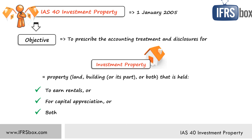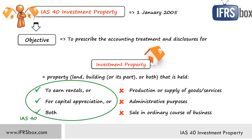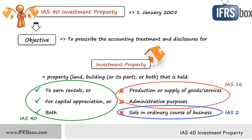Investment property is not held for use in the production or supply of goods or services, or for administrative purposes. It is also not held for sale in the ordinary course of business. You need to focus on the purpose: why are you holding a building or land, and how are you monetizing it? If it's for earning rentals or capital appreciation, use IAS 40. If it's for production or admin purposes, use IAS 16, and in the last instance use IAS 2 in most cases.